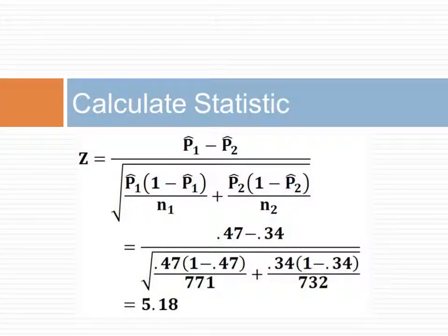Next, we calculate the z statistic. The null value is zero, as we are testing that there is no difference. The population rates are not known, so they are estimated from sample rates. The point estimate is the numerator and the standard error is the denominator. The z value is calculated to be 5.18.